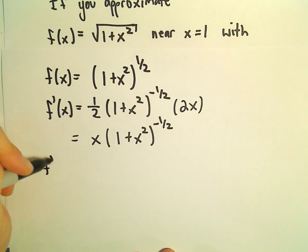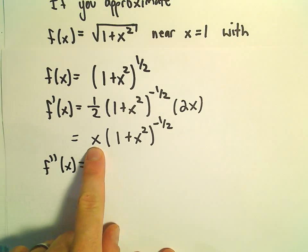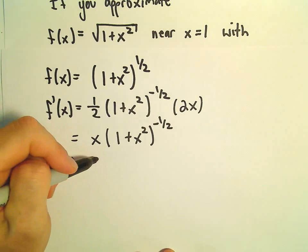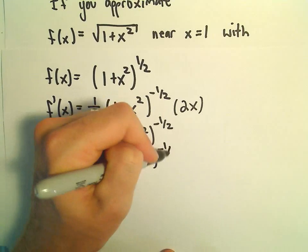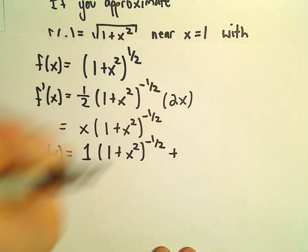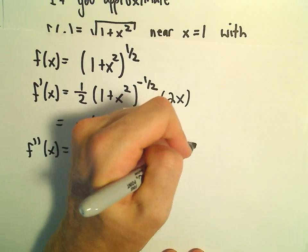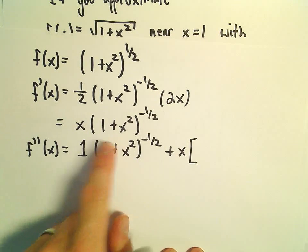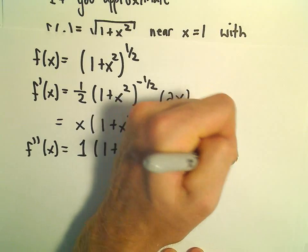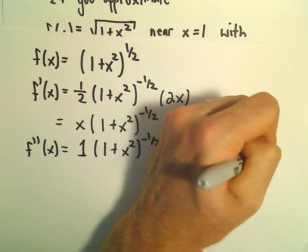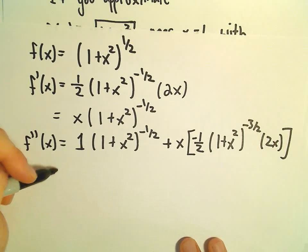Well, we can do yet another derivative, so our second derivative, we'll have to use the product rule. So when we take the derivative of 1x, we'll get 1. We'll have 1 plus x squared to the negative 1 half. Plus, we'll have to take another derivative, so let's leave the x alone. We'll have to do the chain rule, so the negative 1 half will come out front. We'll have 1 plus x squared to the negative 3 halves, and then the derivative of the inside will give us 2x.